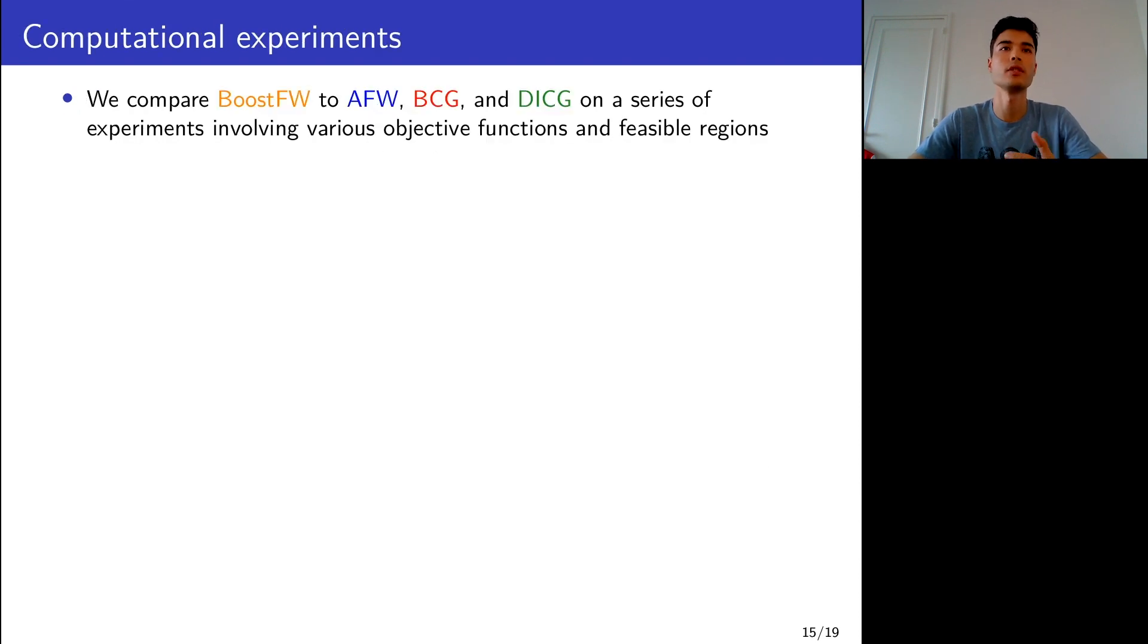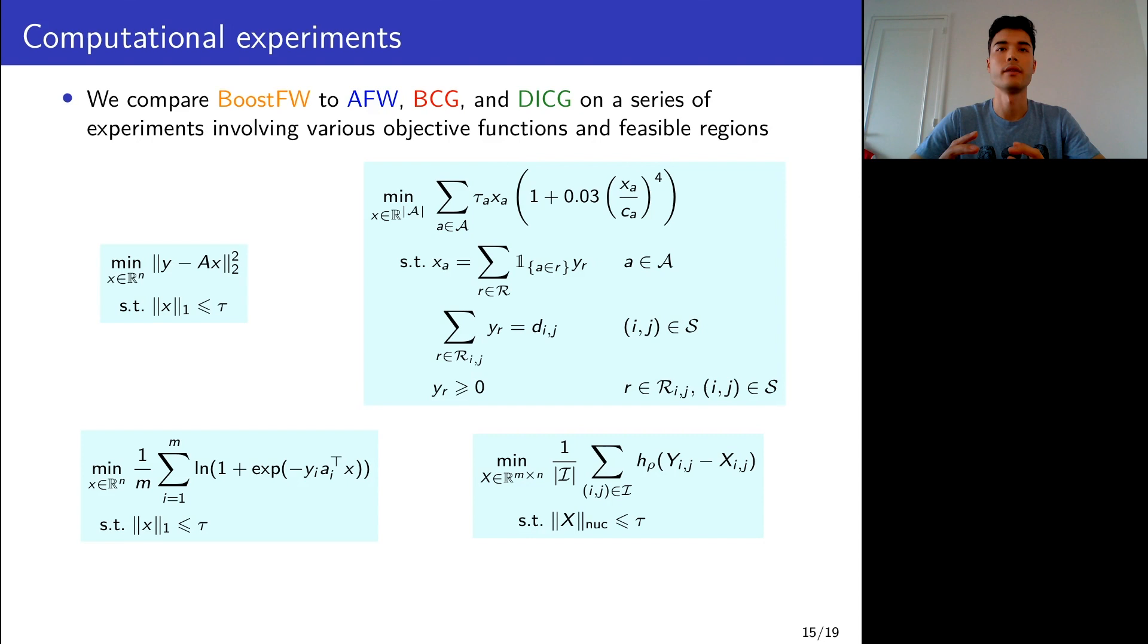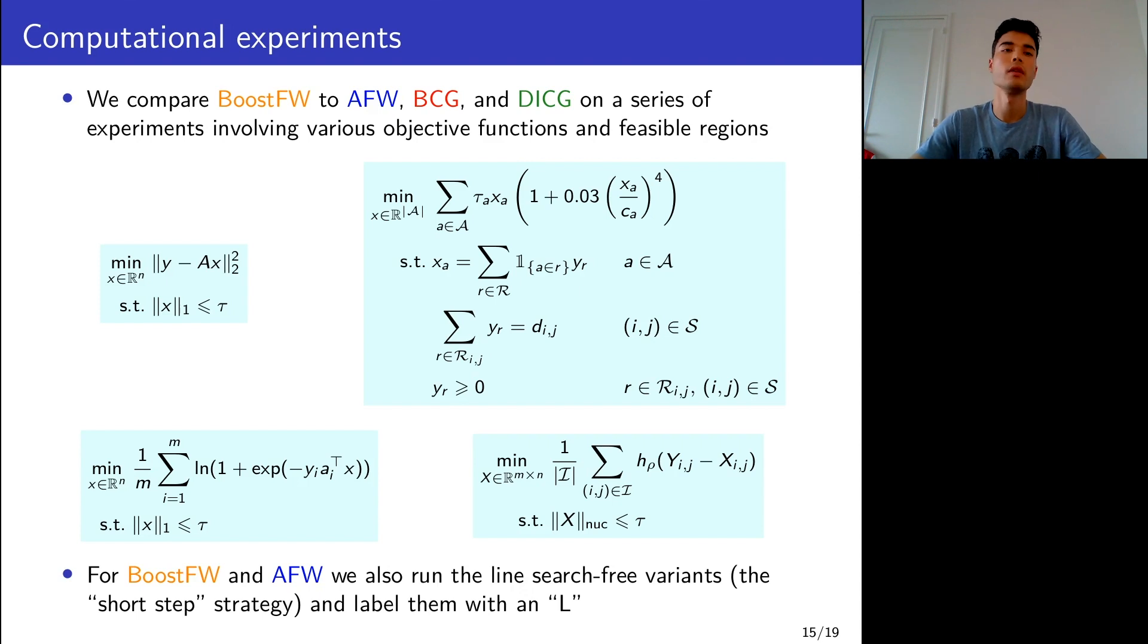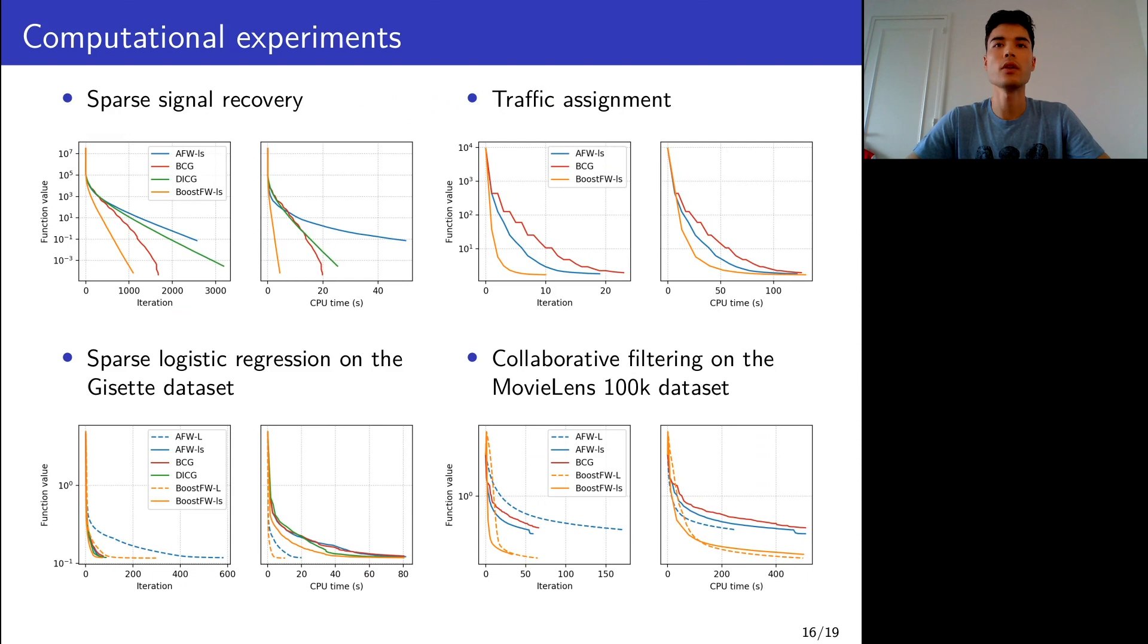As we can see in the experiments, we compared Boosted Frank-Wolfe to the Away-Step Frank-Wolfe algorithm, BCG and DICG on a variety of objective functions and feasible regions, just to show that the boosting procedure is really efficient in a wide set of experiments. The top right is traffic assignment, and the bottom right is collaborative filtering with a few baselines. We also ran line-search-free variants for Boosted Frank-Wolfe and Away-Step Frank-Wolfe. For BCG and DICG, the line-search-free variants were not competitive at all.